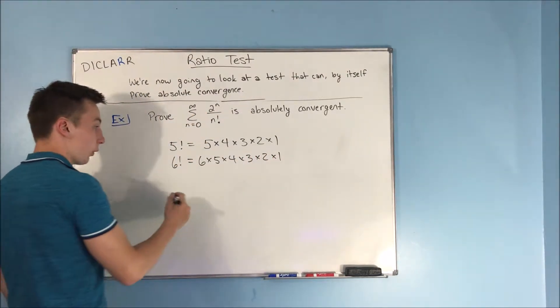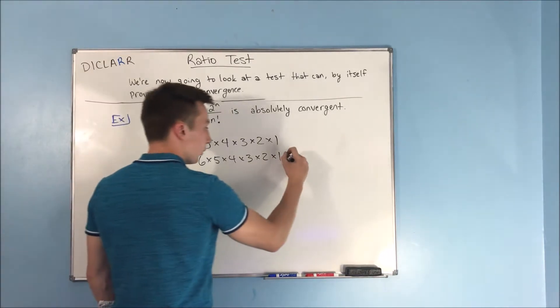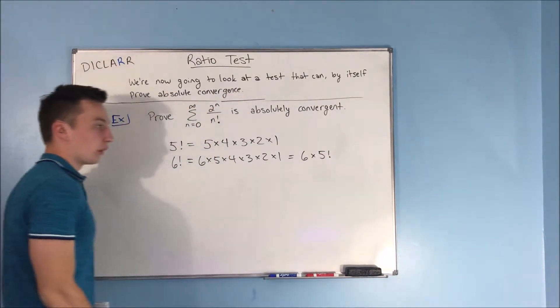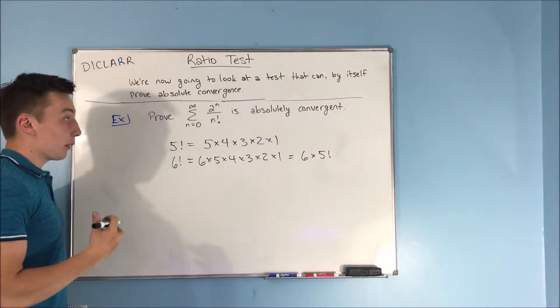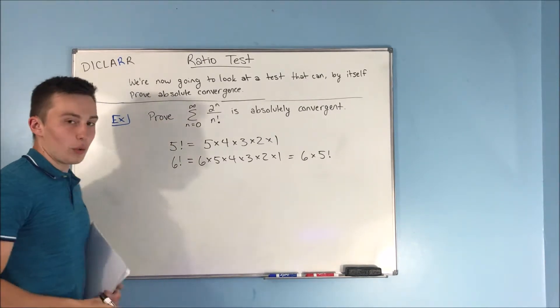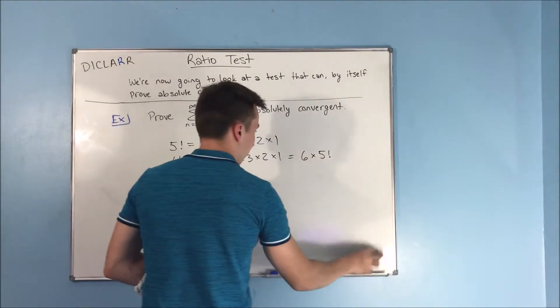Now this is important to see, because if you have a six factorial, that's also equal to six times five factorial. And that's going to be something interesting that we're about to see here. So just kind of hold that thought in your head for just a little bit.